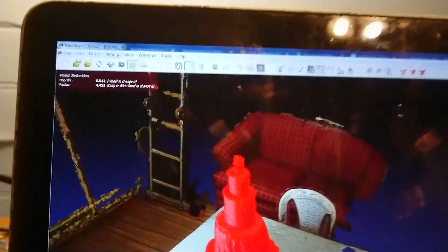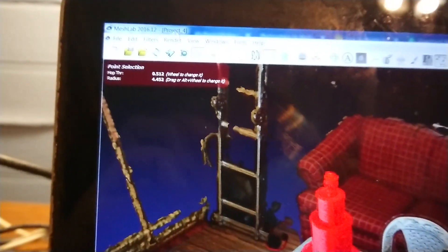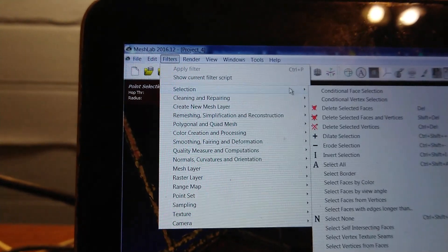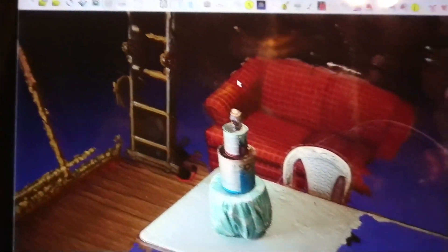Then, I go up to render, or no, I go to filters. And then I go to selection, and I go to invert selection.